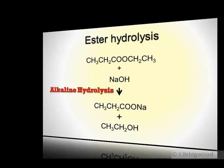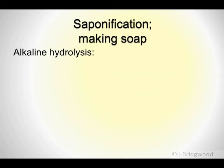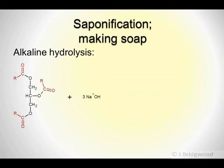Alkaline hydrolysis has a number of uses. One use is making soap. The ester we take in this case is a triester, or a triglyceride. Triglycerides are oils or fats, and the R group is a long chain hydrocarbon. With our triglyceride and sodium hydroxide, the hydrolysis is exactly the same as the previous case — we produce a carboxylic acid salt.